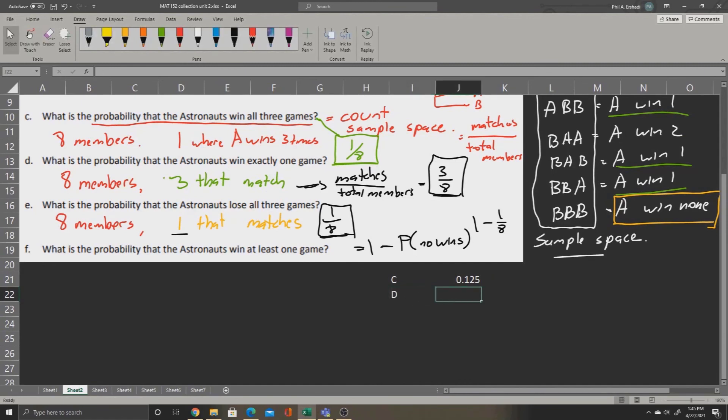For problem D, we'll have three over eight, so we'll say equals three divide eight. Press enter, and we get point three seven five.